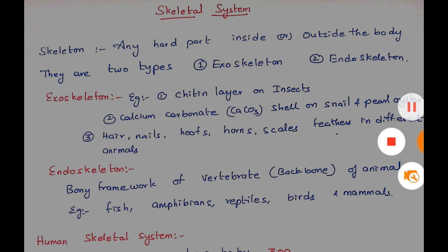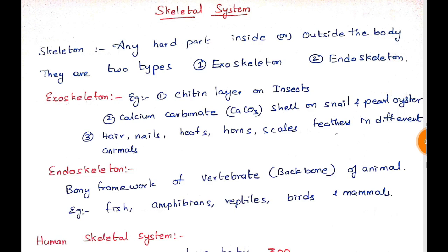What is a skeleton? Any hard part that we can see in the human body is called a skeleton. For some organisms including humans, it is inside the body; for others it is outside. There are two types: exoskeleton and endoskeleton. Exo means outside — in insects, the hard part is on the outside of the body, which is the chitin layer.